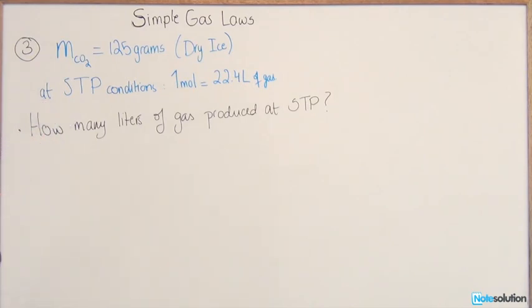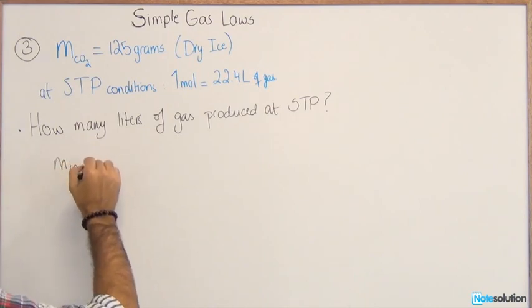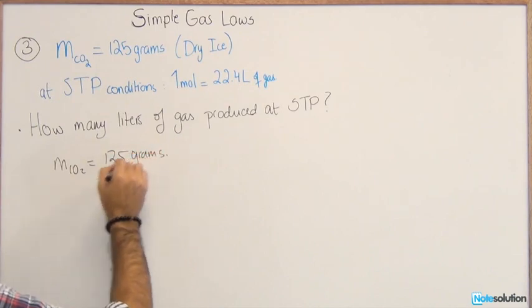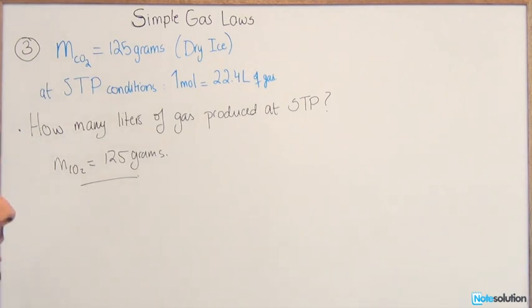In this case, we have the mass of carbon dioxide. The mass of carbon dioxide is 125 grams. We have the temperature being constant and the pressure being constant. In this case, we use Avogadro's law.